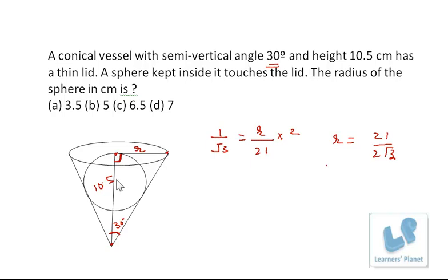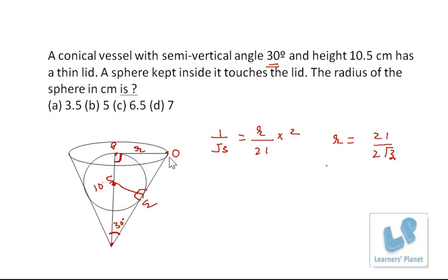Now we have to find out the radius of the sphere. Suppose this is the center. This will be the radius of the sphere, and this is the tangent to the sphere, so the angle between the radius and the tangent will be 90 degrees. Now suppose this is O, P, and Q. OP and OQ will both have the same length because these are two tangents from a single external point. So OP = OQ = 21/(2√3) — that is the radius of the cone.